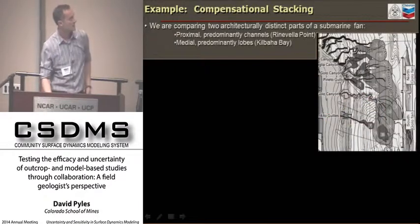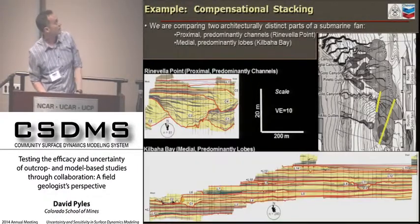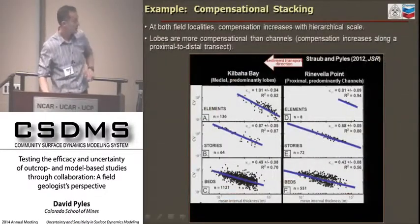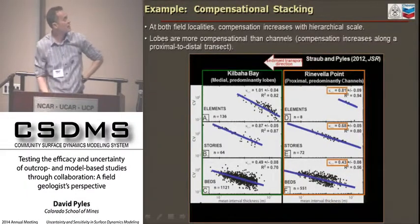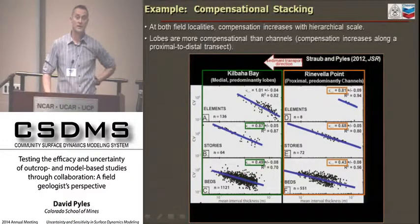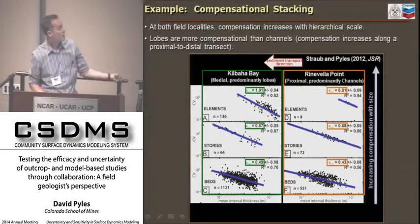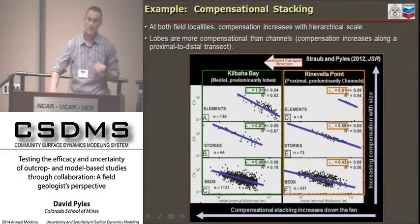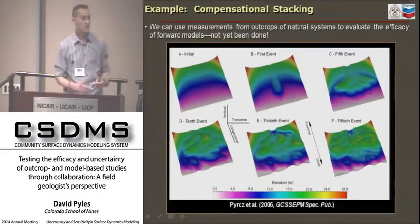Just for clarification, we're looking at architecturally distinctive parts of the fan—up-dip and down-dip areas reflected by Rhinevilla Point and Kilbaha Bay respectively. Here are the model outputs. At Rhinevilla Point, the compensation index increases from small to large scale from 0.43 to 0.81. Similarly, for Kilbaha Bay, which is predominantly lobes, we see the same process operating—compensation increasing with size. We also see that compensation increases in the down-fan direction. What we've done is measured the absolute compensation index for a stratigraphic system, which we can later use to compare with outputs from models.